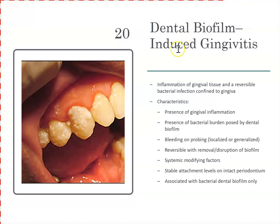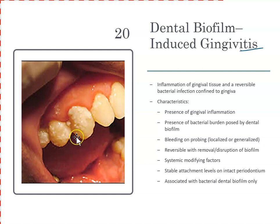Dental biofilm-induced gingivitis, or plaque-induced gingivitis — biofilm and plaque are the same thing. This is inflammation; the gums are inflamed and only the gums are inflamed. 'Itis' means inflammation — so this is inflammation of the gingiva. We see lots of inflammation and plaque, and there would be bleeding on probing. The nice part about this is that it is reversible. With proper oral hygiene, brushing, flossing, and regular debridement, they can be returned to good oral health.